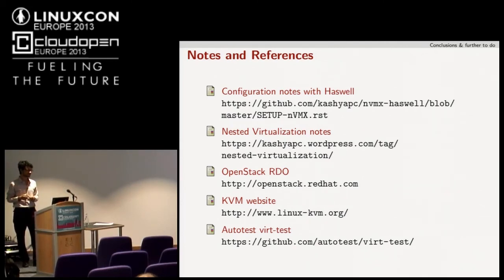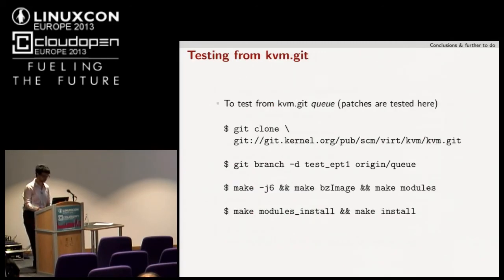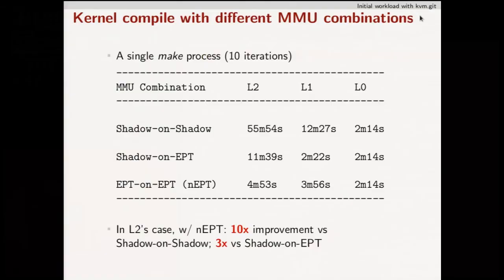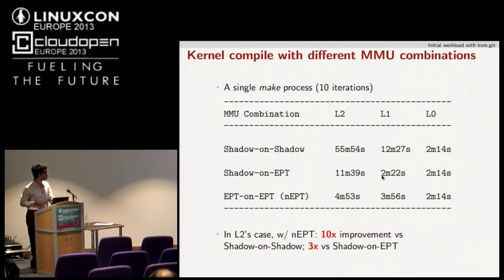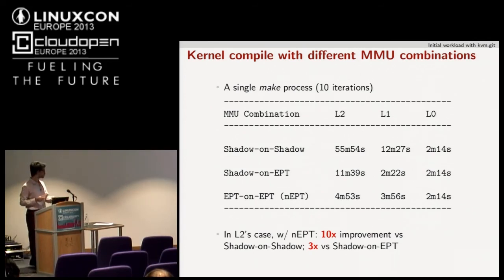Question about the last set of performance numbers: why was L2 significantly faster with doubly nested EPT, but L1 was actually faster with shadow on EPT — why would shadow on EPT matter when you're not running a second-level guest? That's one of the things I need to investigate. One reviewer also raised this question about the shadow-on-EPT case — I need to look into what the bottleneck is there.